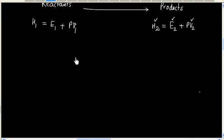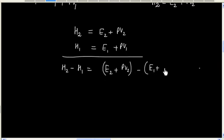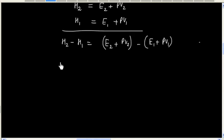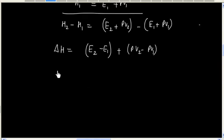Now let us subtract these two expressions. We have H2 − H1 = (E2 + PV2) − (E1 + PV1). H2 − H1 can be written as ΔH, and this becomes E2 − E1 + PV2 − PV1, so ΔH = ΔE + P(V2 − V1).